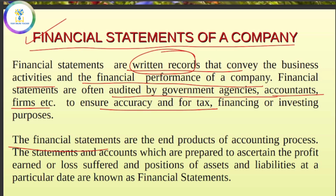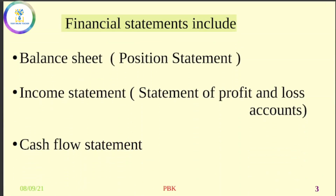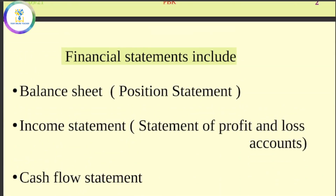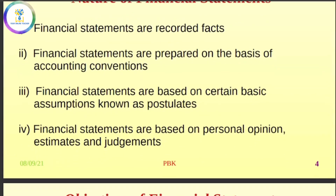If you want to focus on the profit and loss, or the assets and liabilities and position — financial statements include the balance sheet, income statement, cash flow statement, and statement of profit and loss account. This is the 3rd chapter of financial statements.